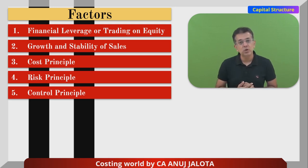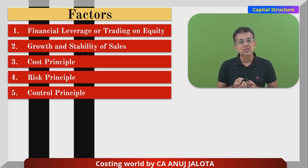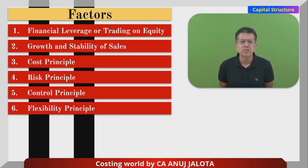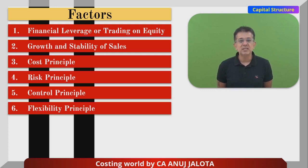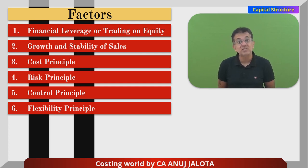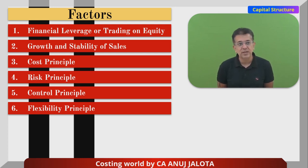Point five: the control principle. Companies that want higher control tend to have fewer equity shares — they raise less capital by equity because otherwise EPS gets diluted and control goes away from the company. Point six: flexibility. Many companies always think they should not issue equity shares because they should retain the flexibility to repay. A company can take a bank loan and after three years repay it — prepayment is always allowed. That is flexible capital, unlike equity shares where you may not have that flexibility.